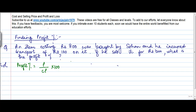Just like in one of the earlier videos, you would have seen that the discount is calculated on the marked price. Similarly, the profit or loss percentage is also calculated with respect to the cost price. If this were a loss situation, you would write loss upon cost price into 100. But that's not what we're discussing here, so let's concentrate on this.